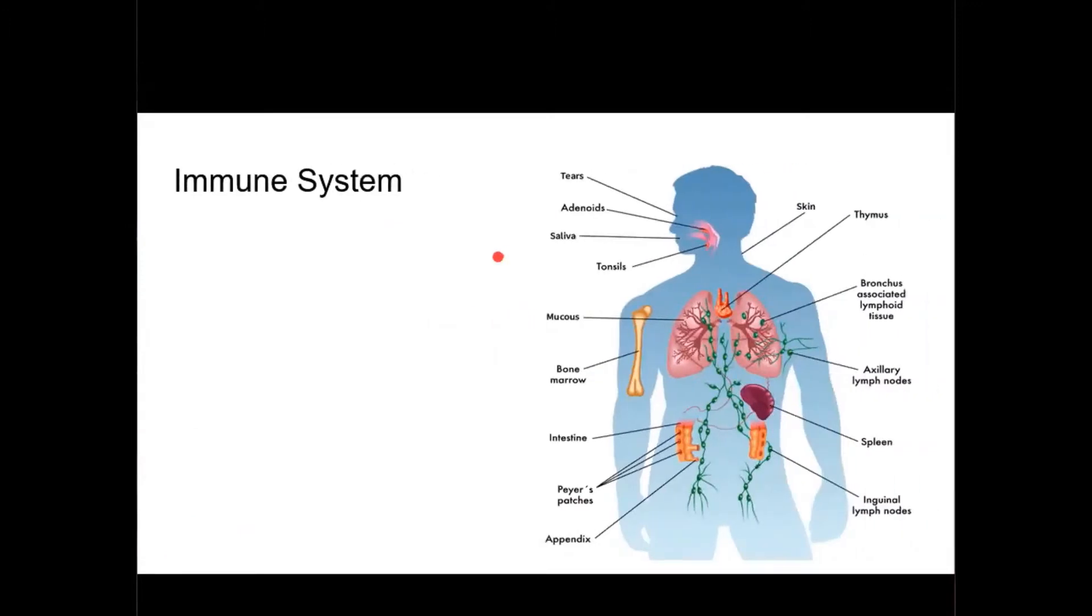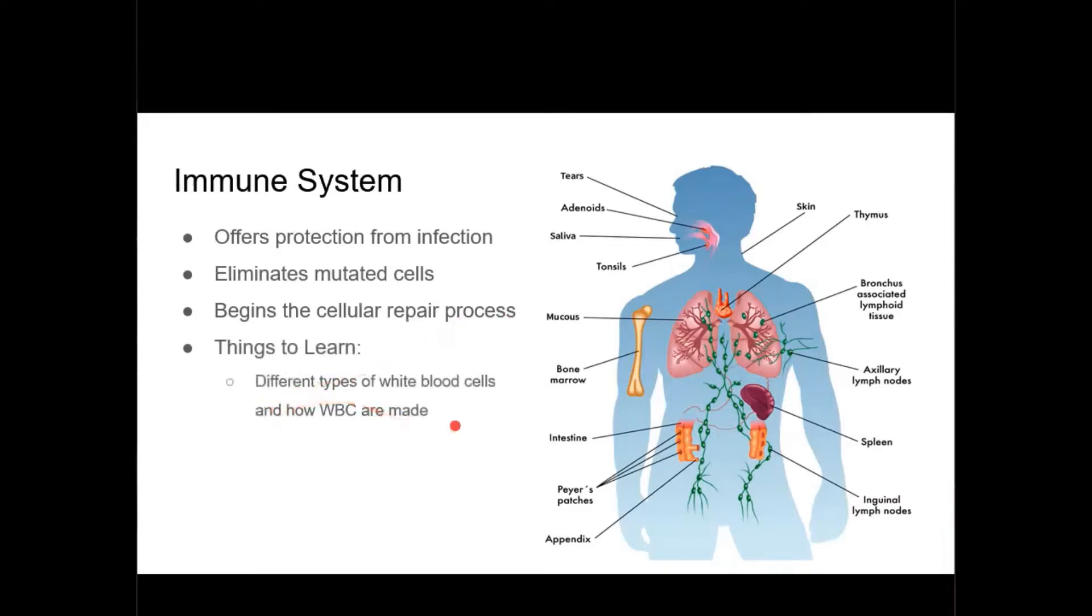Lastly, we're going to talk about the immune system or the protective system of the human body. The immune system offers protection from various infections. It also helps eliminate mutated cells and begins the cellular repair process, like after you get a cut. The things you definitely want to know are the different types of white blood cells and how white blood cells are made. You also want to know what the different types actually do. You want to be able to recognize what an immune response looks like. For instance, when you get a cut, you recognize that it's red, it's hot, it's swollen, and it's sensitive. You want to know what those four things are and why they result from immune response. You also want to know the diseases of the immune system, like what autoimmune diseases are and the common ones, like arthritis.